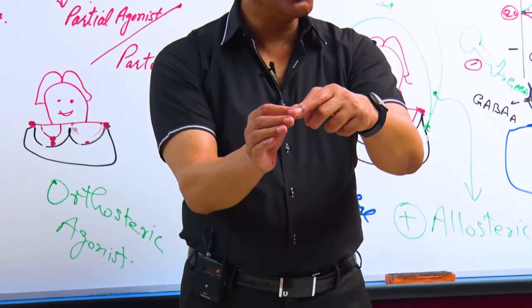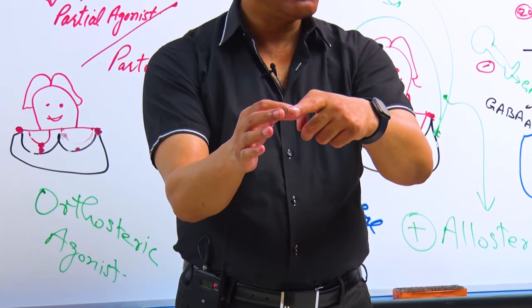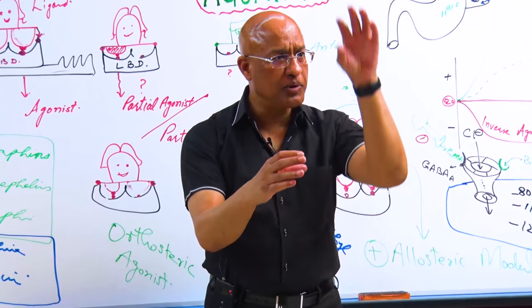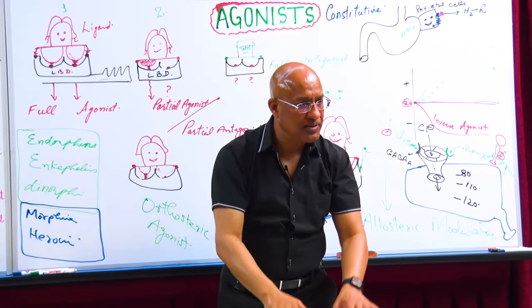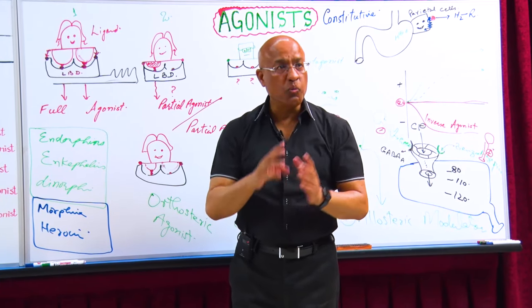It becomes too much open. It remains open. A huge amount, a very big amount of chloride will go in. Membranes become extremely negative and the central nervous system becomes depressed, and it can even lead to coma and death.